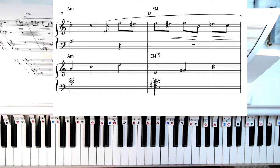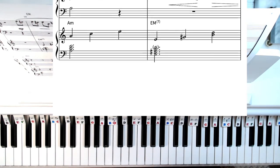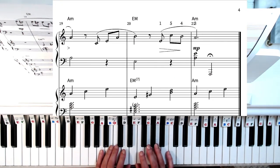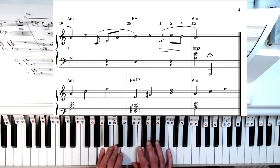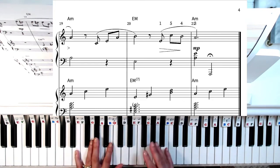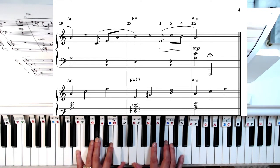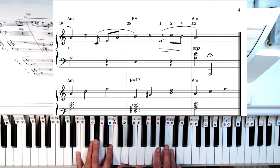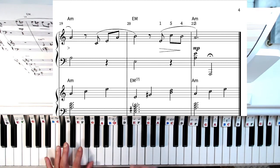And finally to finish out the piece, all you need to do now is just move from the A minor chord to the E major or E major seventh, whichever one. E, G sharp, B, and D. And finally to end the piece, we're going to end it on A minor.